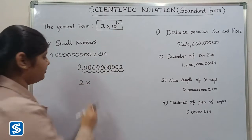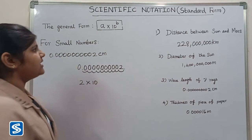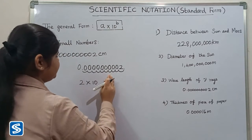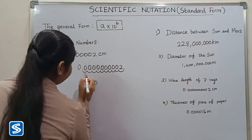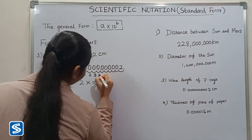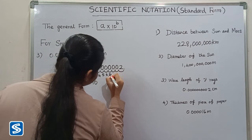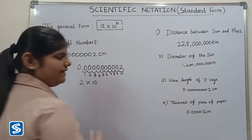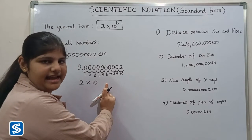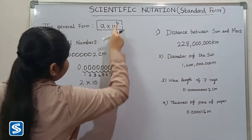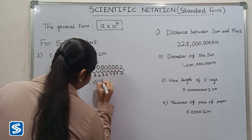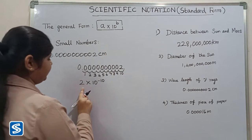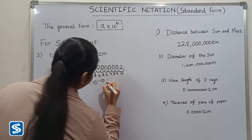The base is 10, so we write 10. Next we find the b value by counting how many places the decimal point was moved: 1, 2, 3, 4, 5, 6, 7, 8, 9, 10. We moved the decimal point to the right side, so the exponent is negative. The b value is −10. Therefore, the scientific notation of this number is 2 × 10^−10 centimeters.